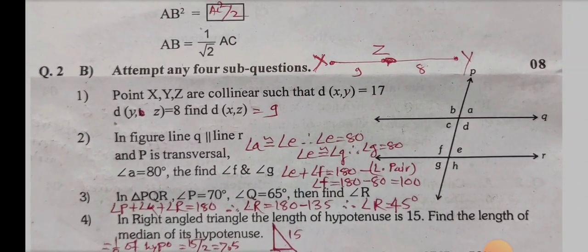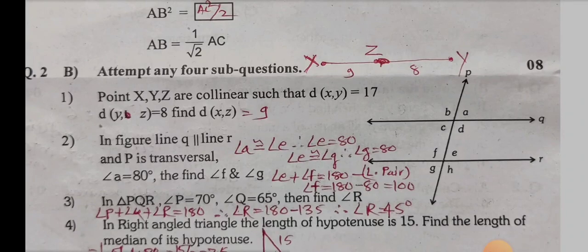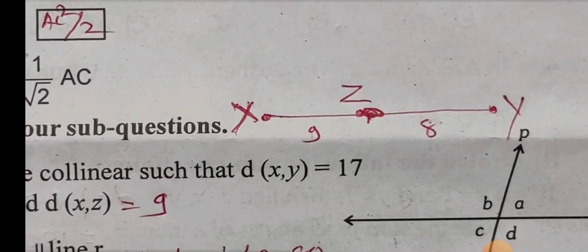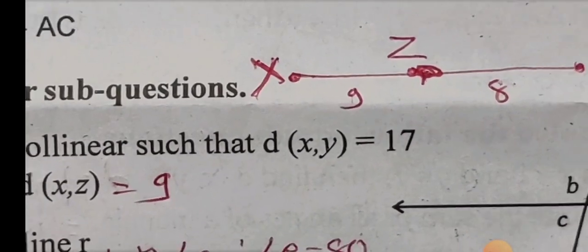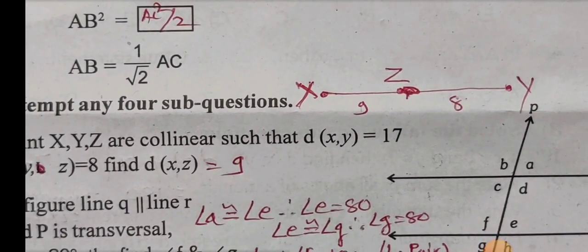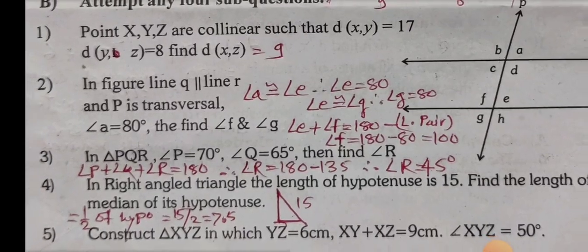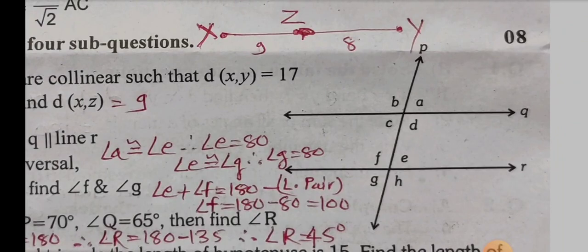Question 2, attempt any four: Sub-question A: Points X, Y, Z are collinear such that distance XY equals 17 and distance YZ equals 8. Find XZ. XZ equals 9 because XZ plus YZ equals XY, so XZ equals 17 minus 8 equals 9.